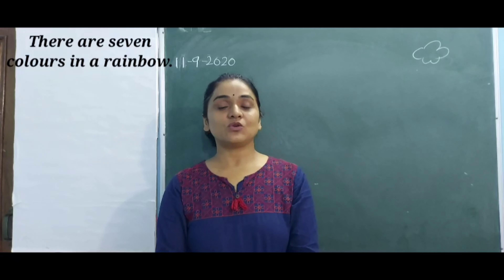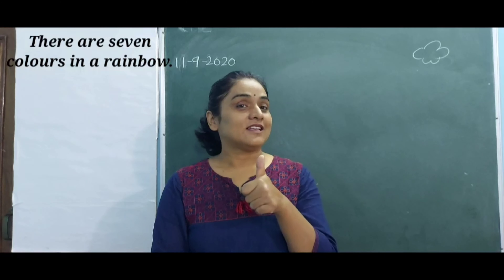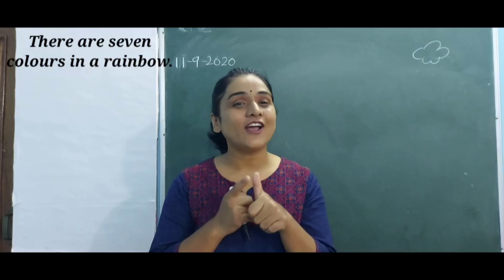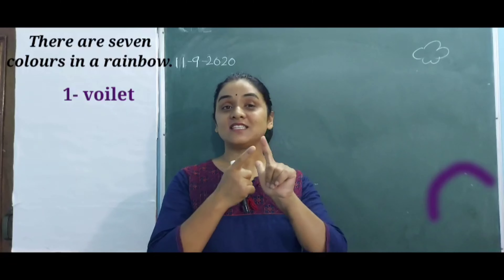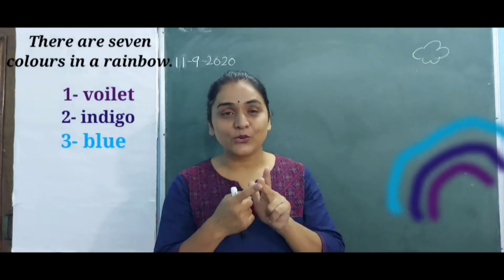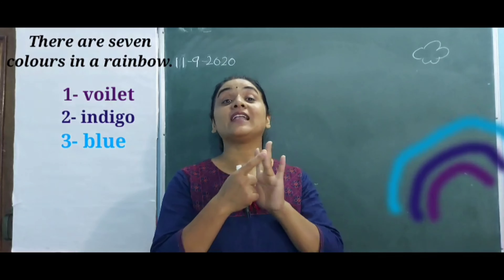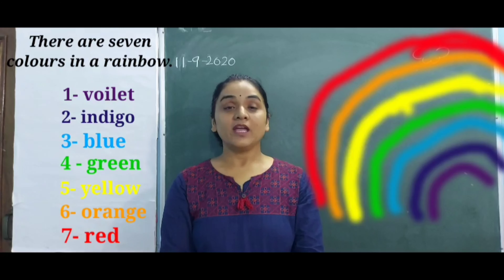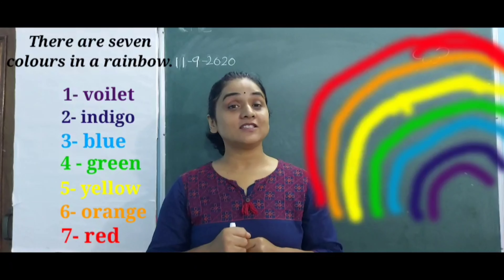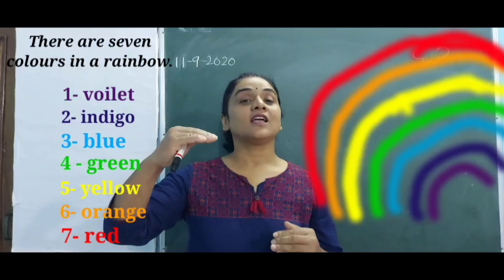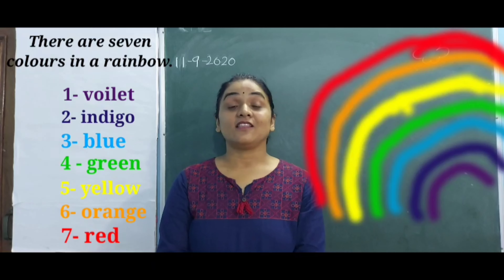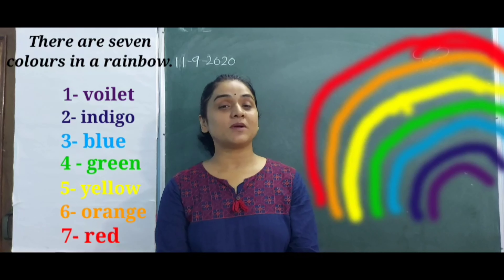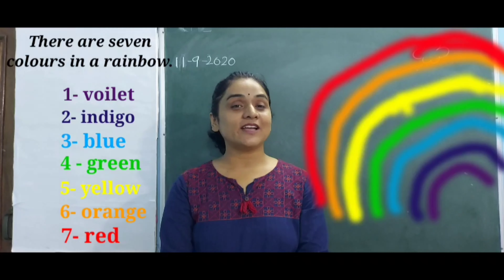Seven colors are there, right children? Can you name them? Yes — violet, very good! Violet, then indigo, then blue, then green, yellow, orange, and red. Okay, seven colors are there in a rainbow. It appears after the rain when the sun comes from one side and the other side is still dark with clouds.